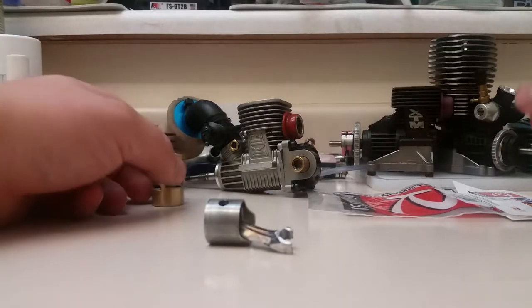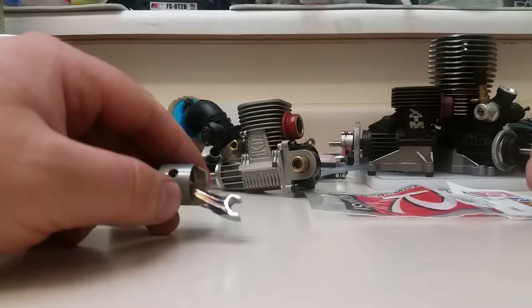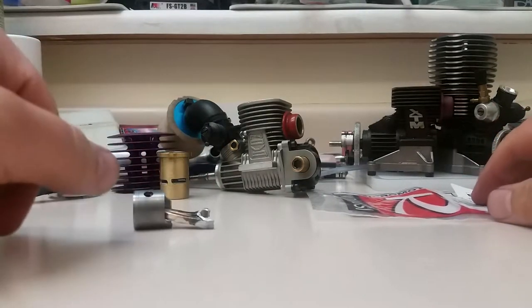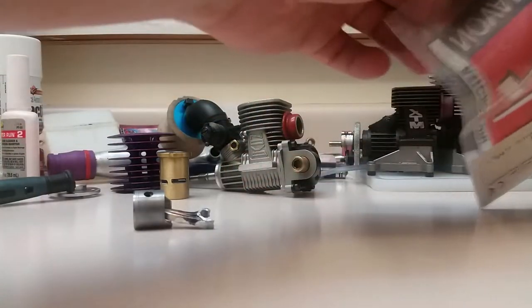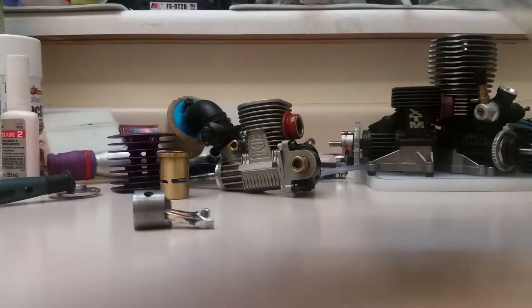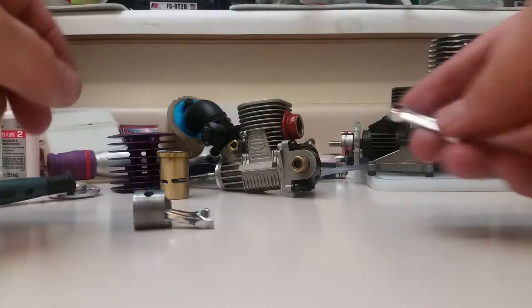Okay, so we have our Nova 28 here that had the severely blown connecting rod. I found no brass anywhere, so I'm assuming it had no bushing. Not too impressed with the quality, but anyhow, we're going to replace the connecting rod and show you how we do that.